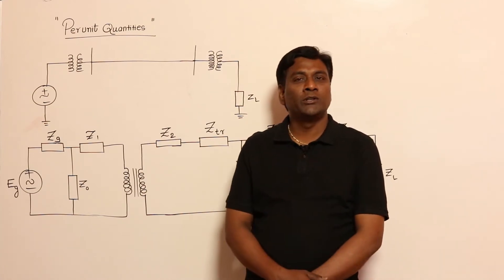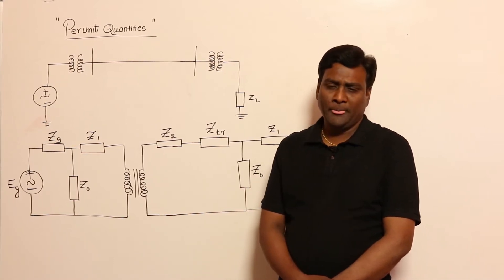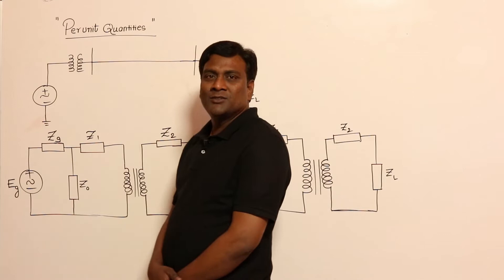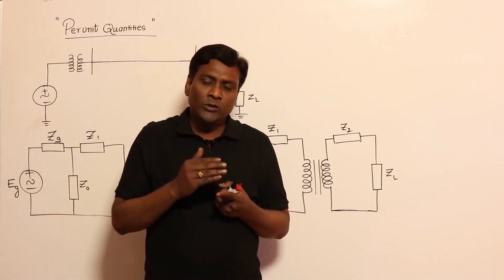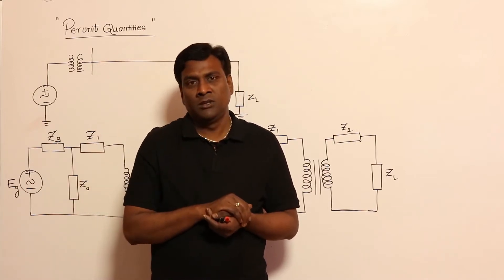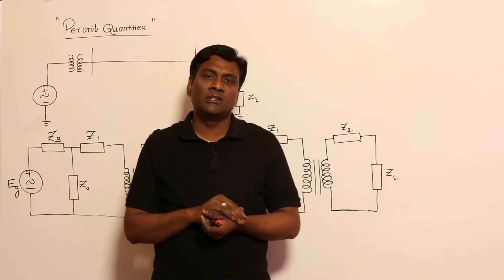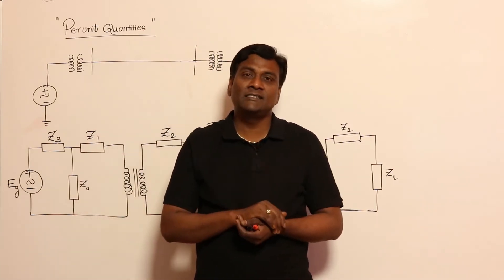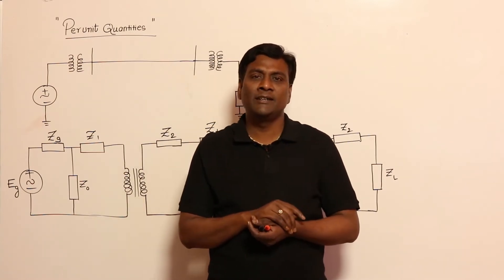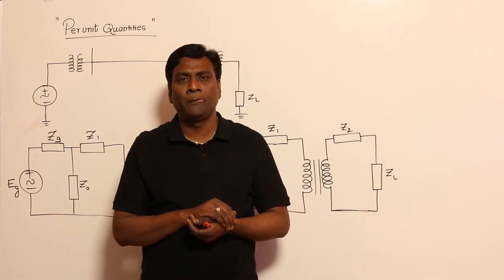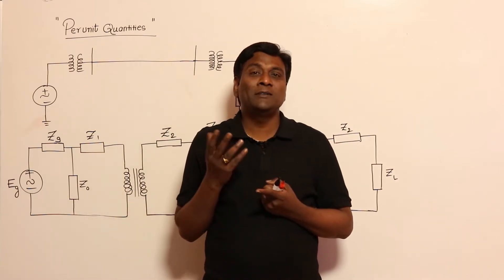In this session let us discuss about per unit quantities — why we have to use per unit quantities. Basically, because of transformers, AC power systems exist. In AC we can keep on increasing voltage levels for transmission and stepping down voltage levels for utilization. In DC there is no equivalent of a transformer, which is why DC failed. So, because of the existence of transformers, AC power systems exist.